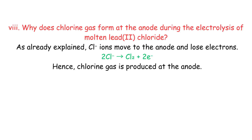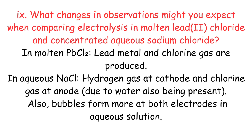Long Question 8: Why does chlorine gas form at the anode during electrolysis of molten lead(II) chloride? Cl⁻ ions move to the anode and lose electrons, hence chlorine gas is produced at the anode. Long Question 9: What changes in observations might you expect when comparing electrolysis of molten PbCl₂ and concentrated aqueous NaCl? In molten PbCl₂, lead metal and chlorine gas are produced. In aqueous NaCl, hydrogen gas forms at the cathode and chlorine gas at the anode, due to water also being present.